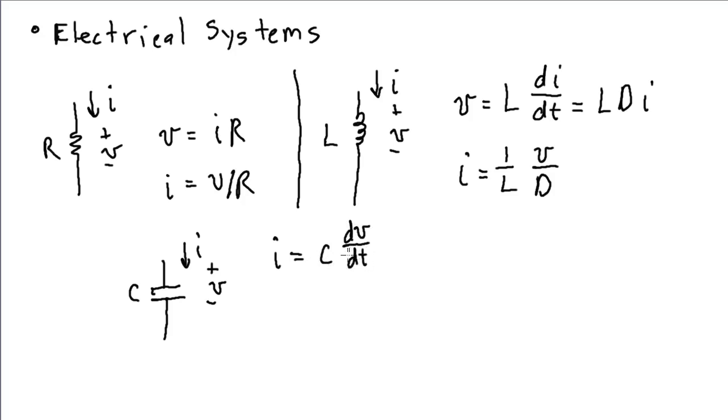So the current to a capacitor is proportional to the time rate of change of the voltage across it. And the proportionality constant is the capacitance. Or using our D notation, we can write that as C dV.